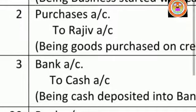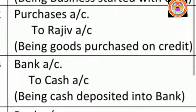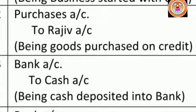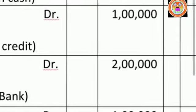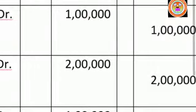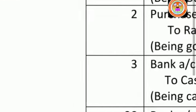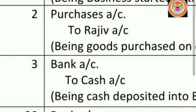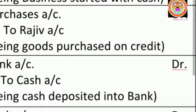Then we use the personal account rule: debit the receiver, credit the giver. Here Rajiv is the giver, so we credit Rajiv account. Write 'To Rajiv account', leaving a small space from the line. Amount ₹1 lakh in both debit and credit columns. Write the narration: being goods purchased on credit.